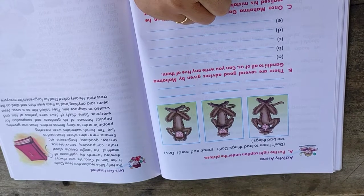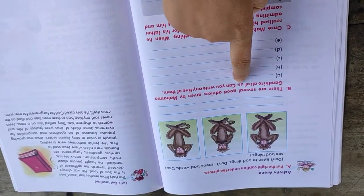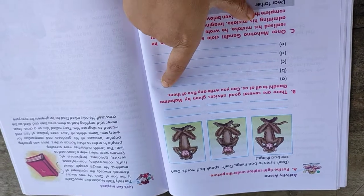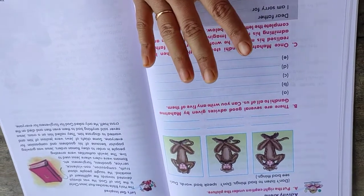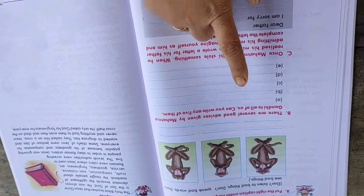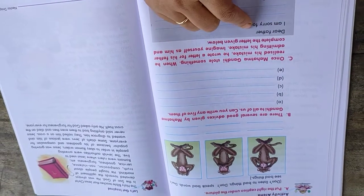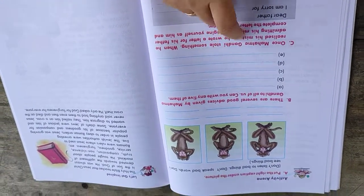Now this is interesting. You have to put the right caption under the picture. Don't listen to bad things, don't speak bad words, and don't see bad things. These three captions need to be placed under the correct monkey. Please try this.